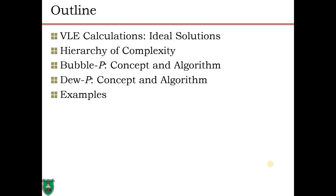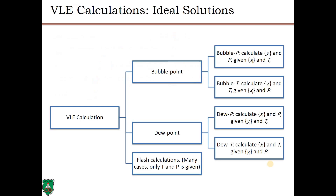These calculations vary in their hierarchy of complexity — some are straightforward and some are iterative in nature. In vapor-liquid equilibrium calculations there are three categories: bubble point calculations, dew point calculations, and flash calculations.